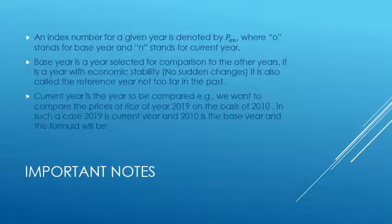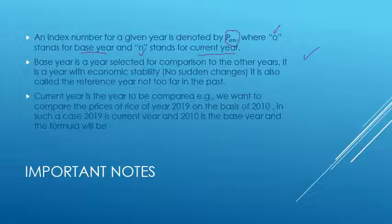Now there are some important notations you need to know before our main topic. The index number for a given year is denoted by P₀ₙ, where 0 stands for the base year and n stands for the current year. The base year is a year selected for comparison, so we have a comparison year and a year for comparison. The base year is the year with which we are going to compare our current year quantities or prices.